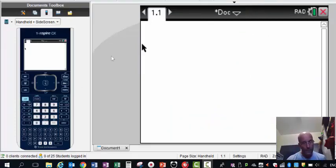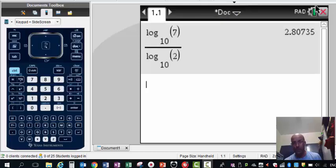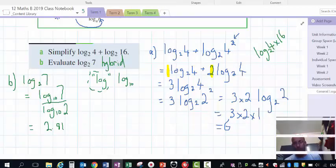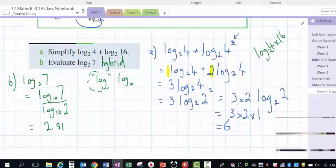So if we get our calculator here and we type that in, see what we get, and that's approximately 2.81 if we round to two decimal places. So there we go.